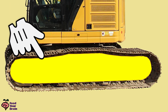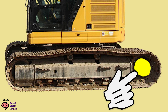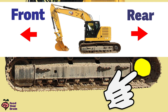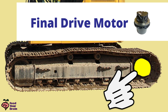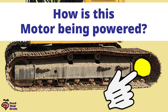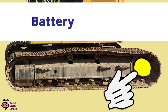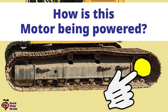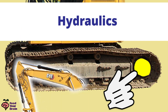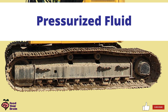Let's look at the components here that make the moving of the tracks possible. This is the rear of the excavator, and this is the front. In the rear of the undercarriage, at this end of the rear of the track, is what's called the final drive motor. Final drive means this is the final drive that powers the tracks. It's important to understand how this final drive motor is being powered — it's not from a battery and it's not from fuel. This motor is being powered by hydraulics, the same hydraulics that power the boom, arm, and bucket. It's pressurized fluid that is giving the power to move these giant and heavy tracks.